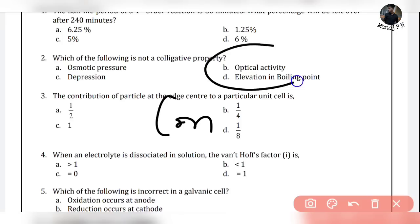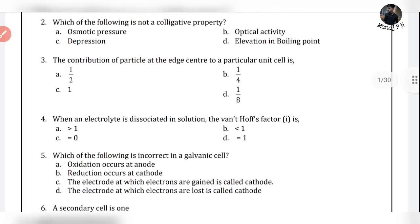There is one option: optical activity. Is optical activity a colligative property? Optical activity depends on the identity of the molecule — specifically whether it can superimpose on its mirror image. That is an identity property of the molecule, not a concentration-dependent property. So optical activity is not a colligative property — option B is your answer.